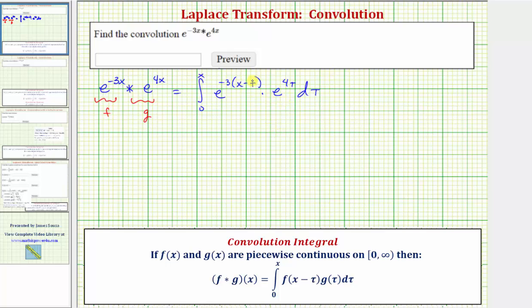Let's go ahead and distribute here, and then because we're multiplying with the same base, we can add the exponents. So we'd have the integral from zero to x of e raised to the power of negative 3x plus 3 tau, and then plus 4 tau d tau.